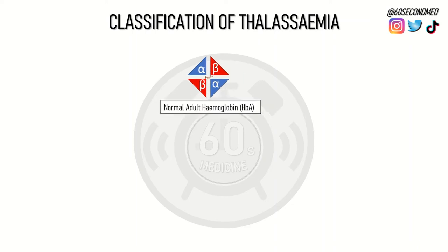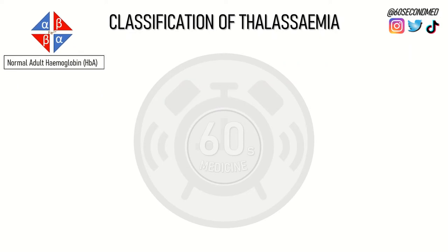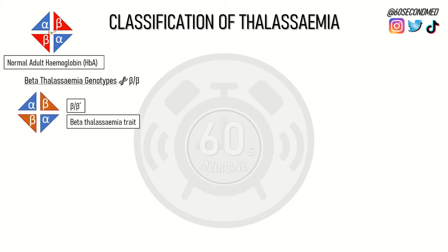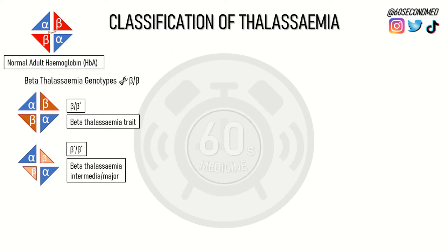Beta thalassemia is due to deficiency of the beta globin chain. This is due to point mutations that can reduce or completely abolish beta globin synthesis. If one allele is affected, there are no overt symptoms. But if both alleles are affected, patients will experience a severe microcytic anemia, and most of the adult hemoglobin will be replaced with fetal hemoglobin and HbA2.